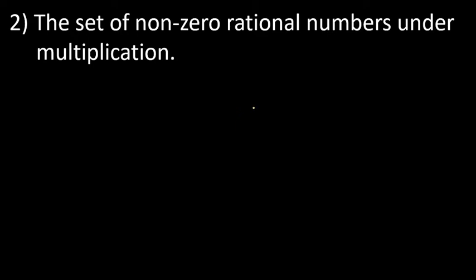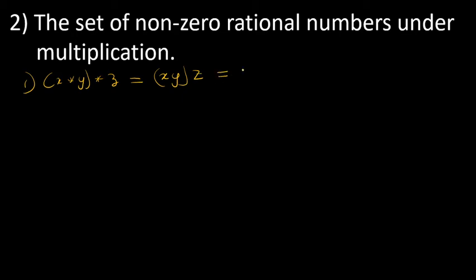The second example is the set of non-zero rational numbers under usual multiplication. Let's find out what the identity and inverse are. First, consider associativity: x star (y star z). Since star is usual multiplication, this is x times (y times z). Since these are rational numbers, you can multiply in this manner, giving (x times y) times z, which equals (x star y) star z. So this is an associative binary operation.